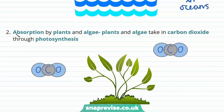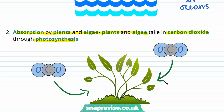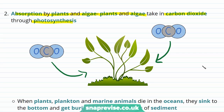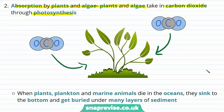Another way in which carbon dioxide has been absorbed is by plants and algae. This is because plants and algae take in carbon dioxide in order to carry out photosynthesis, and this is how they get their energy. This is one reason why levels of carbon dioxide in the atmosphere fell.